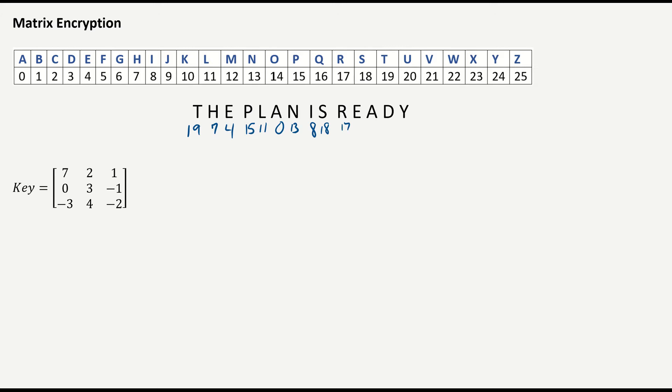And then because I am using a 3x3 key, the message matrix that I put my message numbers into, it has to have three rows and any number of columns, okay? Just to make sure the matrix multiplication works, I'm going to make this a little bigger. So here, it has to have three rows, okay, so that we can actually perform that multiplication. But then how many columns?